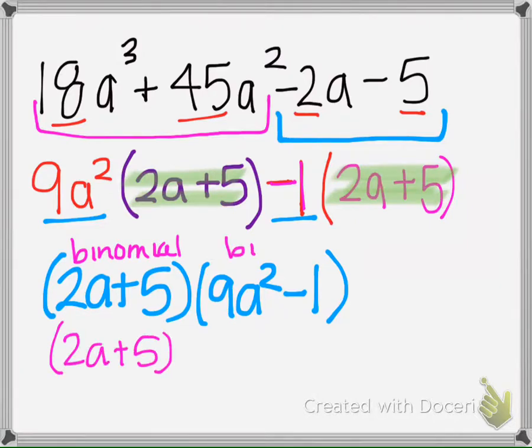And then here we have a binomial, so we're looking for the difference of 2 squares or the sum and difference of 2 cubes. Since we know that 3A times 3A is 9A squared and 1 times 1, that's how we know that it is a difference of 2 squares. So we're going to have 3A plus 1 and 3A minus 1.